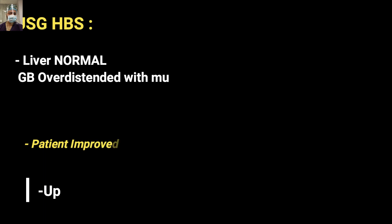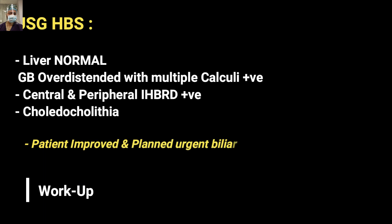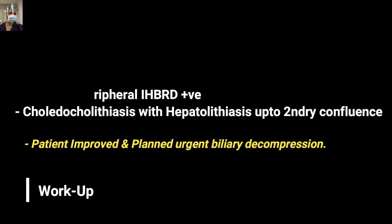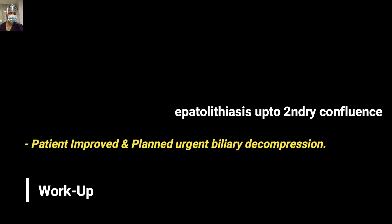Ultrasound abdomen was suggestive of an abnormal liver with an over-distended gallbladder with multiple calculi. There was central and peripheral intrahepatic biliary radicle dilatation with choledocholithiasis and hepatolithiasis up to the secondary confluence. The liver had to be commented upon since the patient can present with secondary biliary cirrhosis. The gallbladder was important because, since the stone was primarily in the CBD, it should have been contracted as per Courvoisier's law — and there was an extensive stone burden.